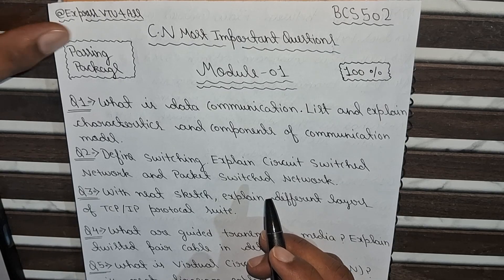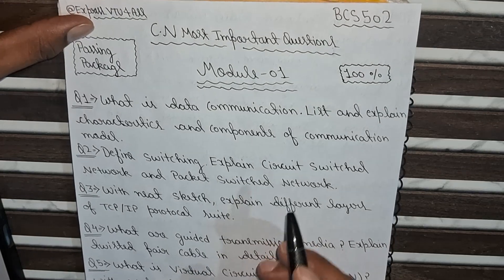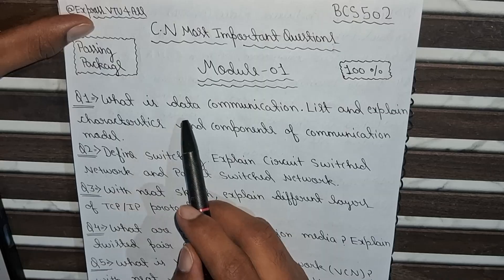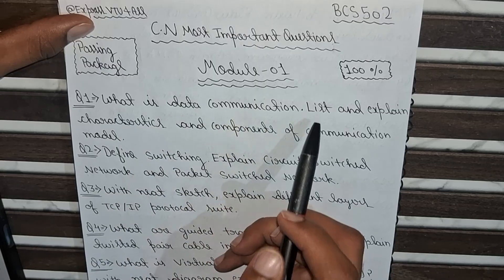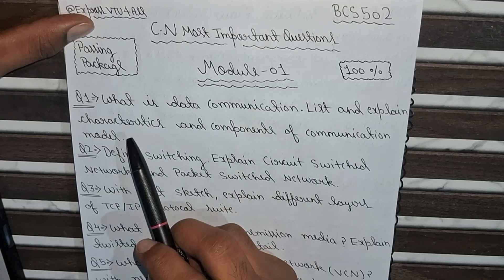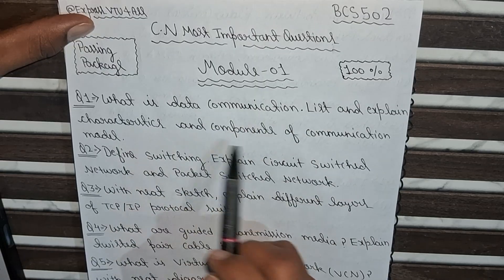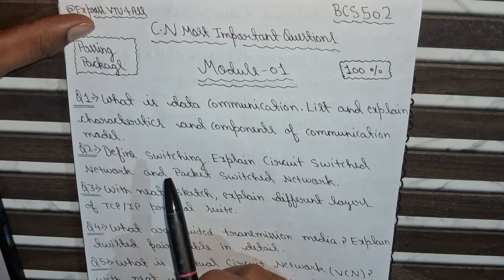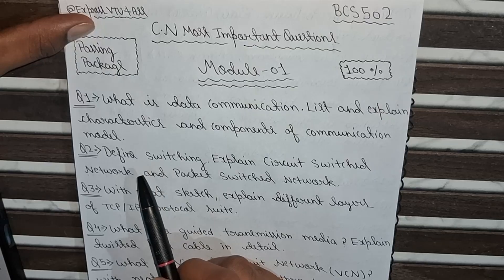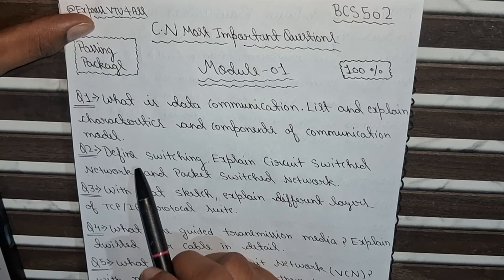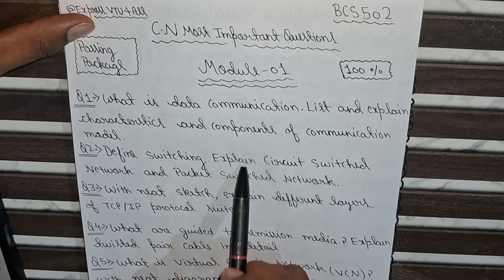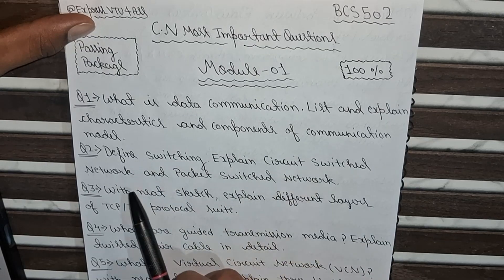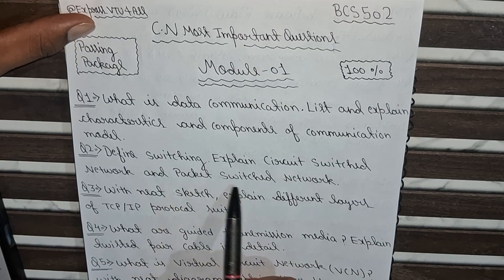We start from Module 1. The first question is: What is data communication? List and explain the characteristics and components of the communication model. Question 2: Define switching. Explain circuit-switched networks and packet-switched networks.